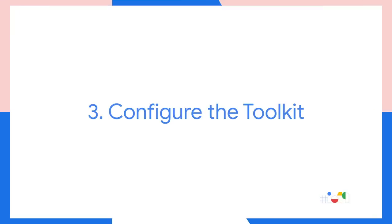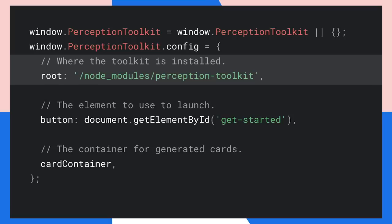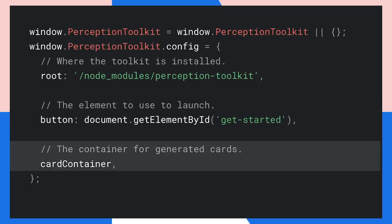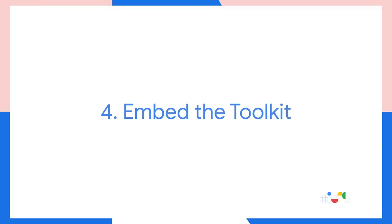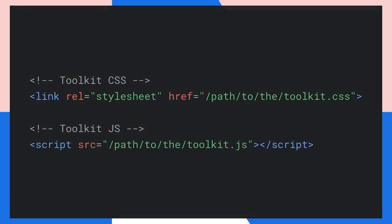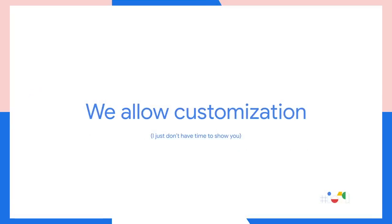After that, you configure the toolkit by putting an object into the global. A minimal config includes the root (where the toolkit has been installed), the button you'd like to use to launch the experience, and the container for generating cards. Finally, you embed the toolkit by putting some CSS and JavaScript into the page. We do allow customization — you can change how the cards look and other things. If you want more information on that, check out the documentation linked below, and there's also a link at the end of this video.